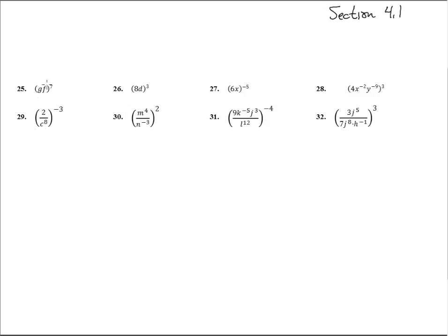Here we have GF all raised to the seventh power. That's going to be GF, GF, GF, seven times. By the commutative property we can switch these places until all the G's are together and the F's are together. It looks kind of like a distributive property but it's not multiplication over addition or subtraction. It's this exponent attaching to everything in the parentheses. G to the seventh, F to the seventh.